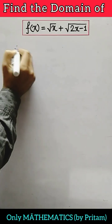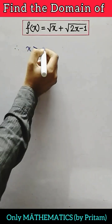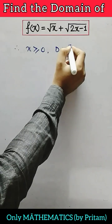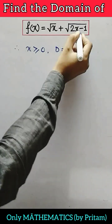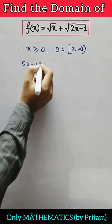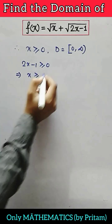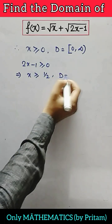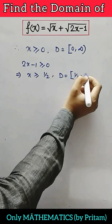Every expression under the square root should be non-negative. So x greater than or equal to 0, meaning the domain will be 0 to infinity. Next, 2x minus 1 must also be greater than or equal to 0, so x greater than or equal to half. Therefore the domain for this condition will be half to infinity.